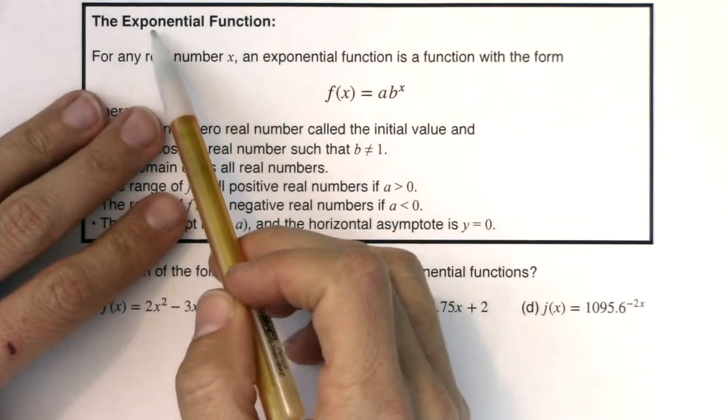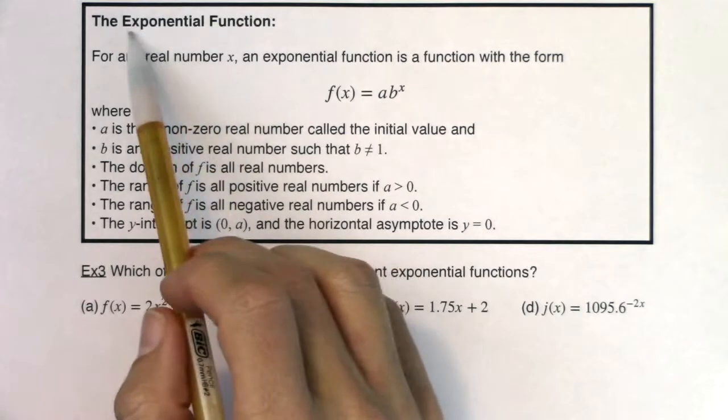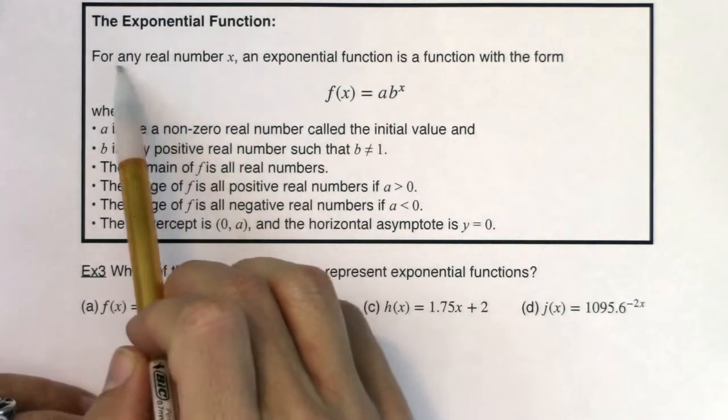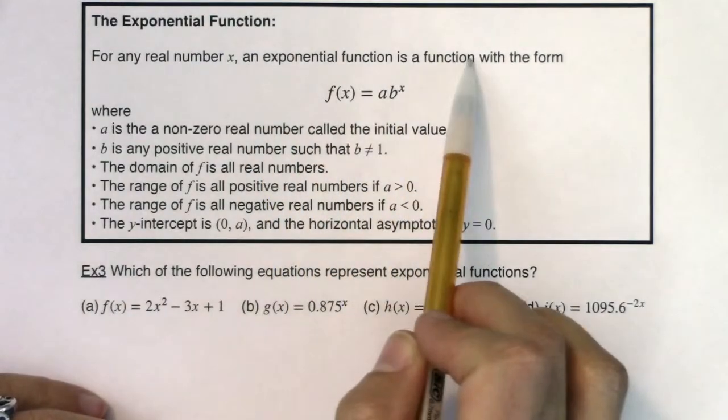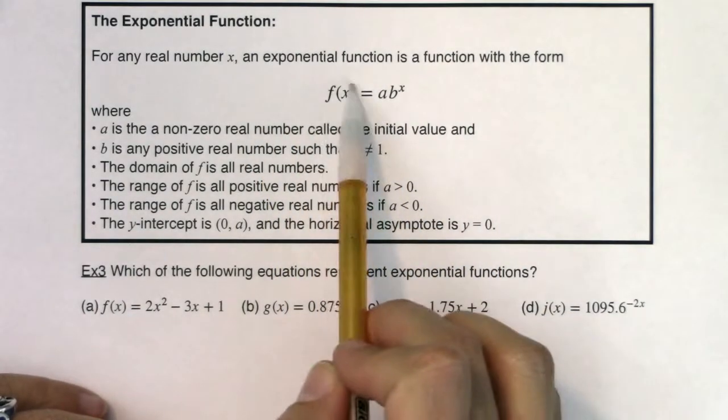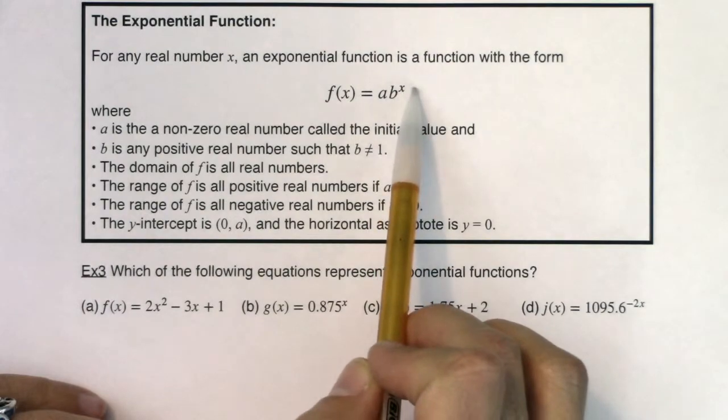Here's the definition for how a function is officially an exponential function. For any real number x, an exponential function is a function with the form f(x) = a times b to the x.